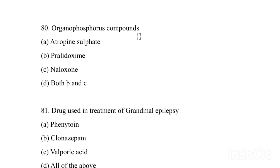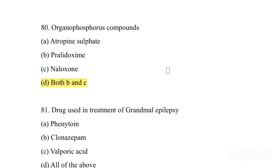Antidote for organophosphorus compounds: Option A: Atropine sulfate. Option B: Pralidoxime. Option C: Naloxone. Option D: Both B and C. Answer is Option D — both Pralidoxime and Naloxone are antidotes for organophosphorus compounds.